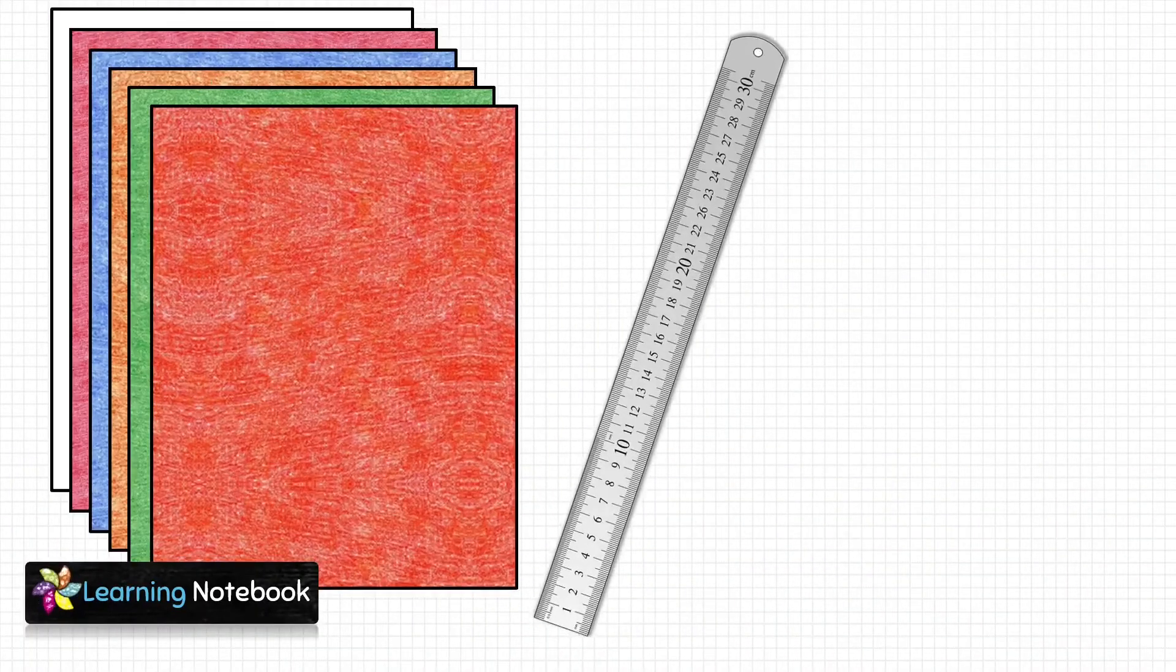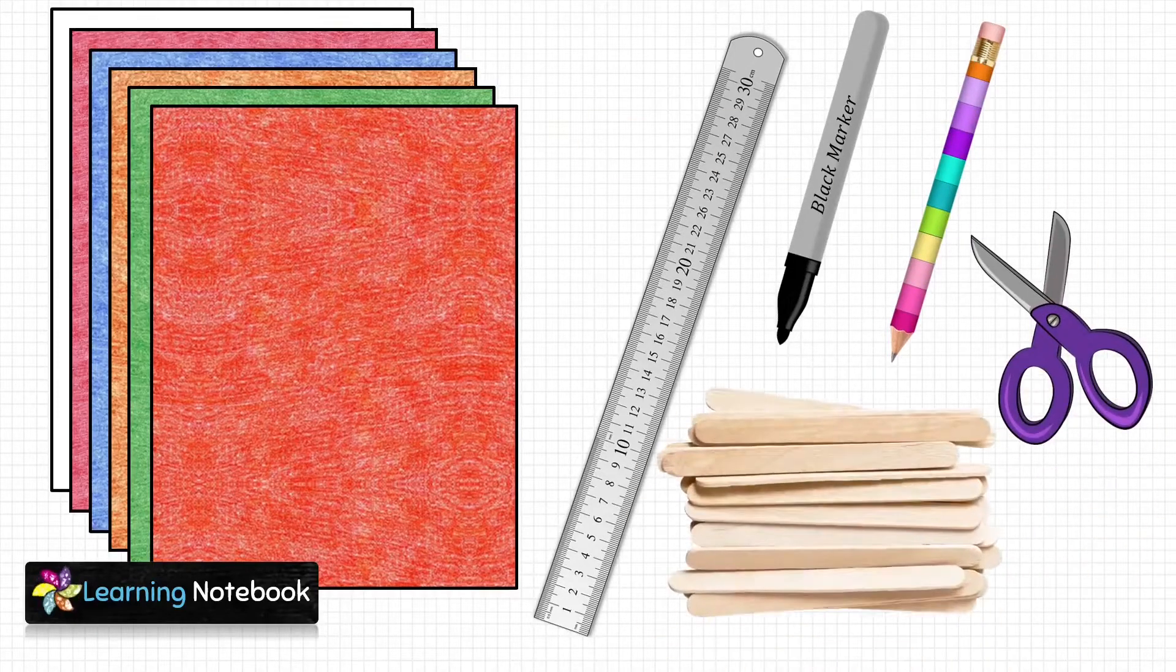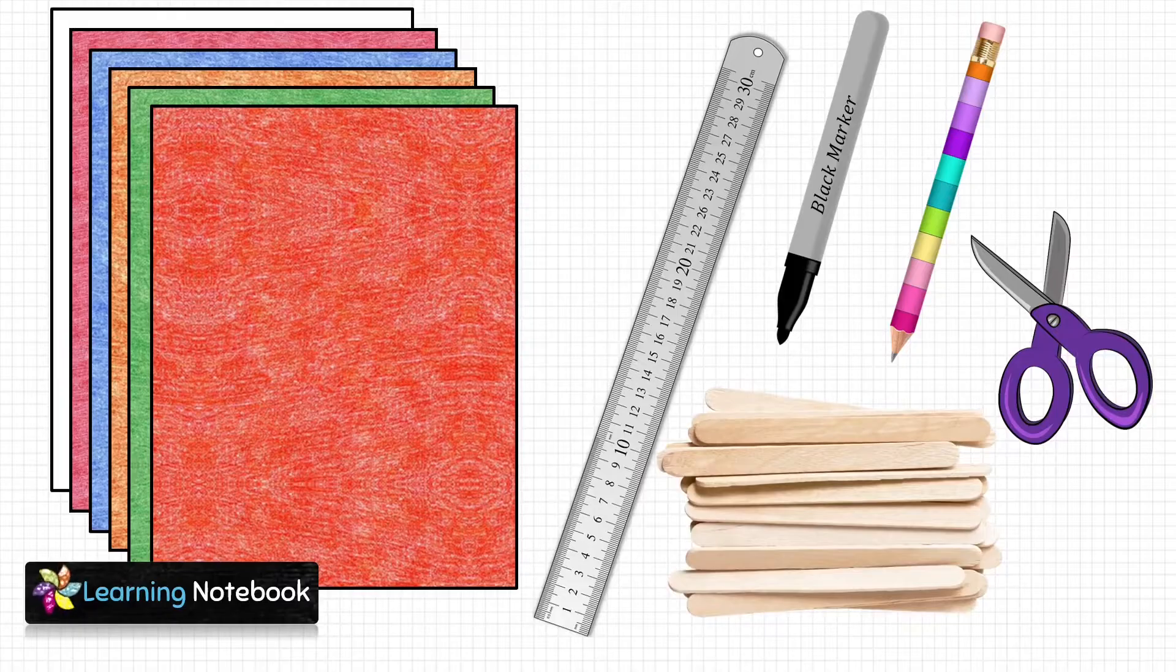For this activity we need a few colorful thick sheets, a ruler, a black marker pen, a pencil, a pair of scissors, and a packet of ice cream sticks.